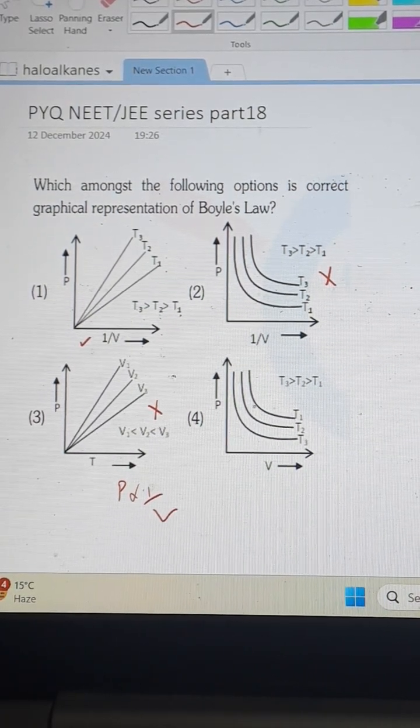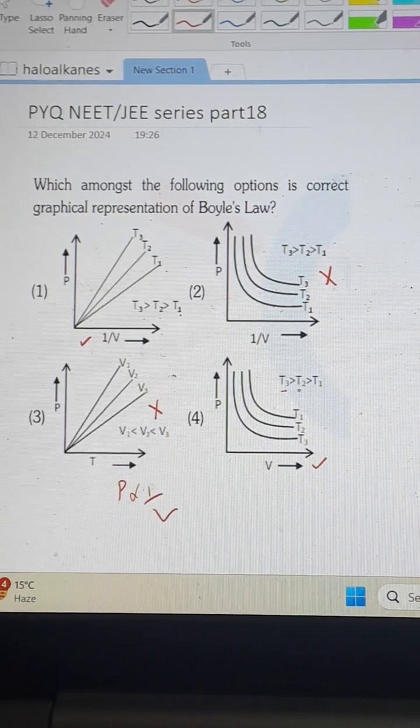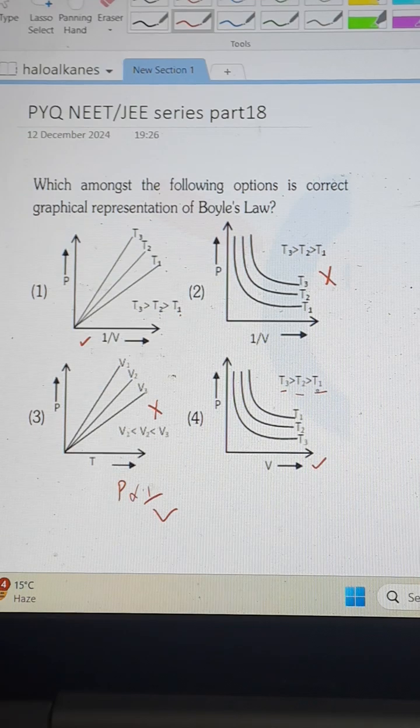Fourth one P versus V, curved graph, the graph is correct. But see the temperature range. T3 is greater than T2 is greater than T1.